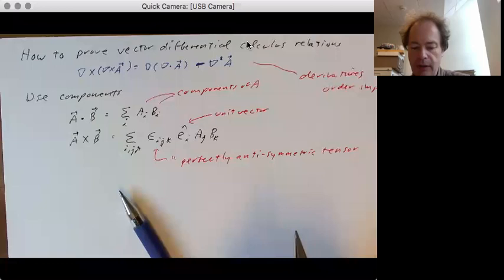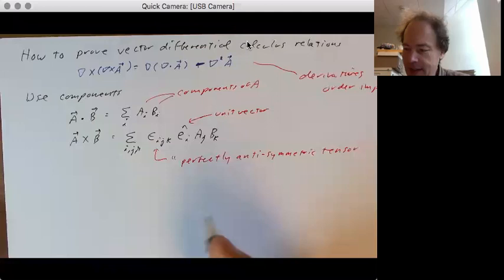So what does that mean? Well, let's take epsilon 1, 2, 3 is equal to plus 1.